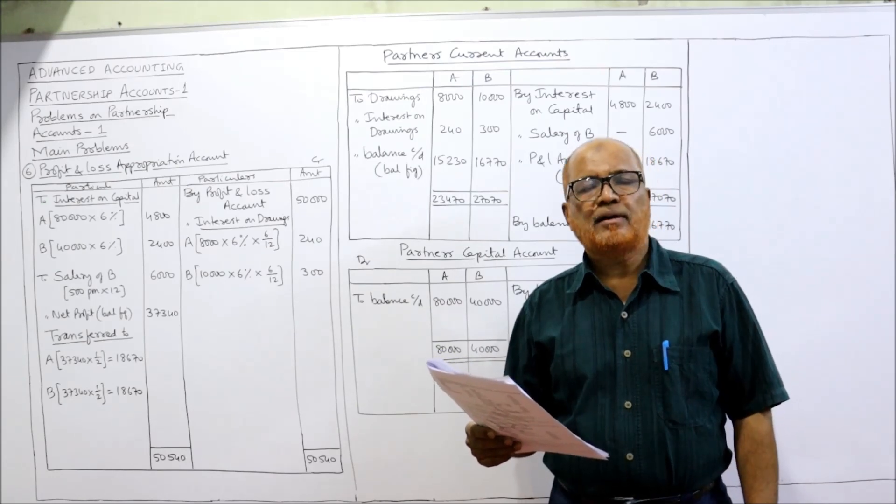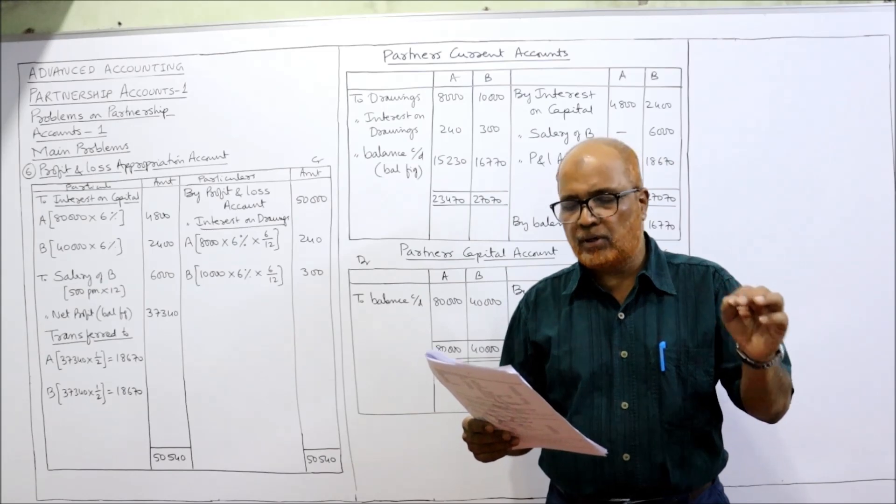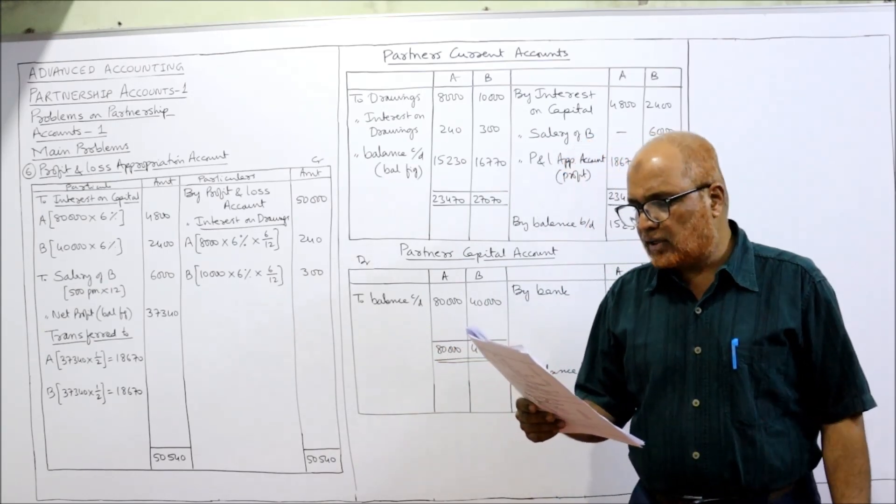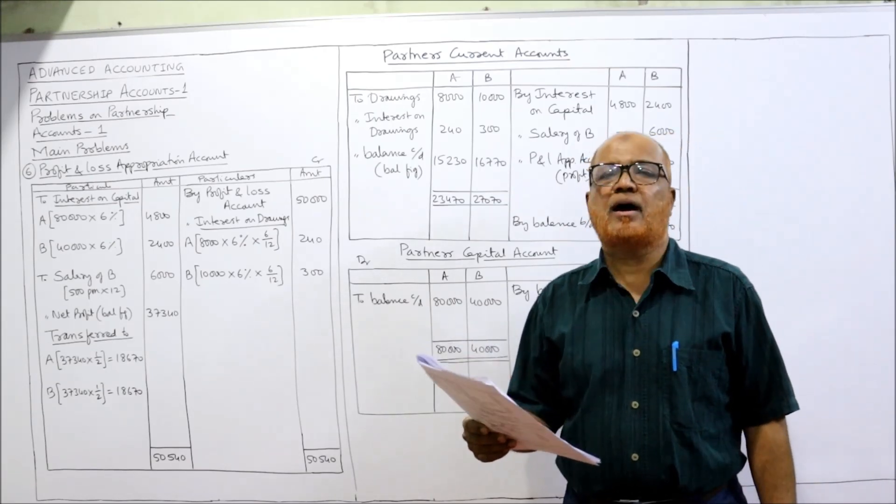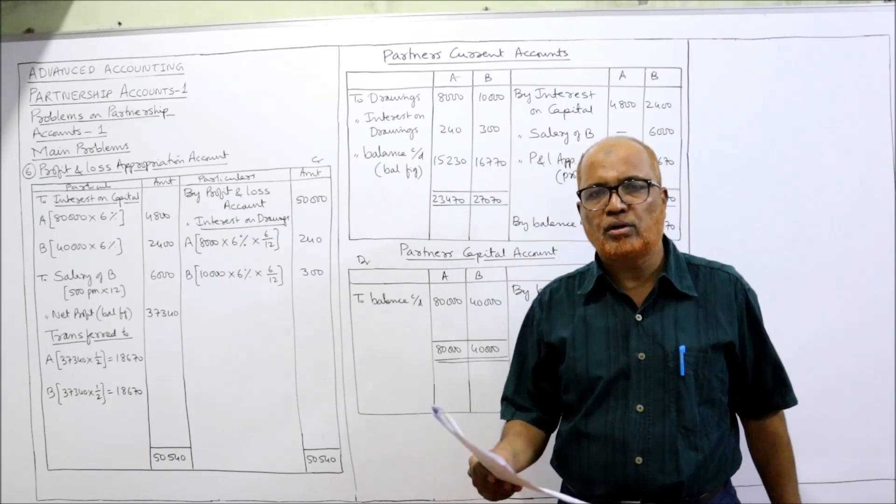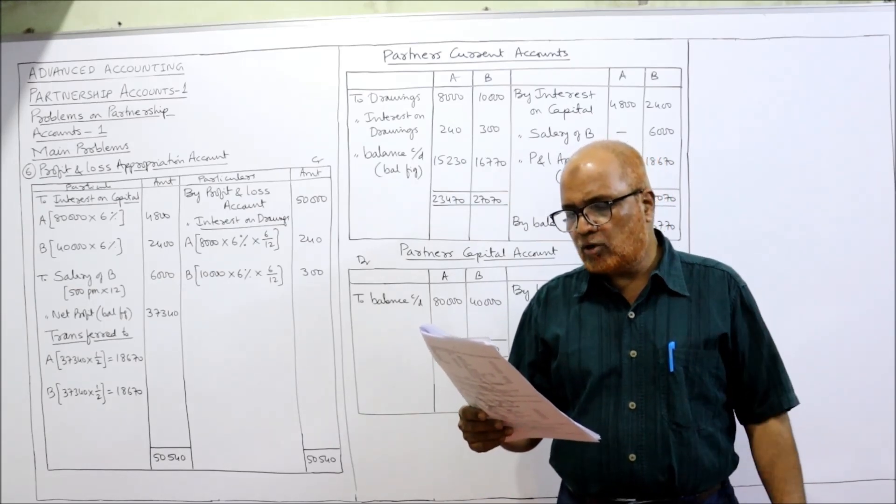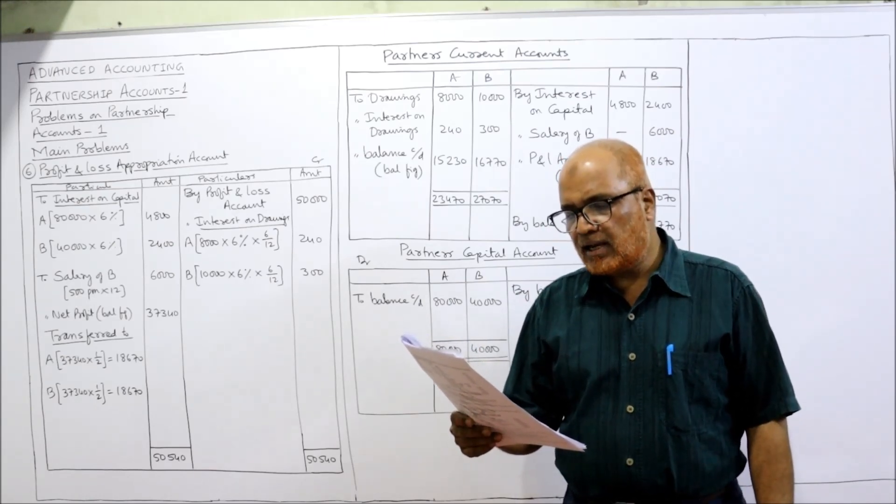B is entitled to a salary of 500 per month, so 500 into 12, 6,000 rupees is the salary for B. Interest is allowed on capital and is charged on drawings at 6% per annum. So we have both interest on capital as well as interest on drawings. Profits are to be distributed equally after making the above adjustments.